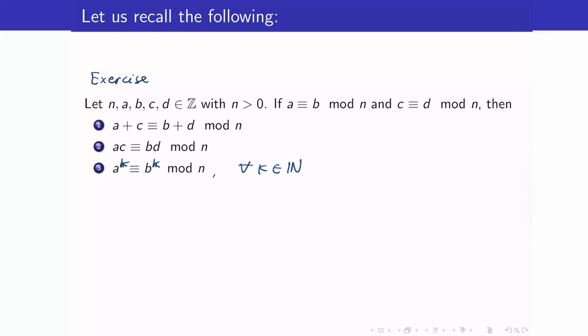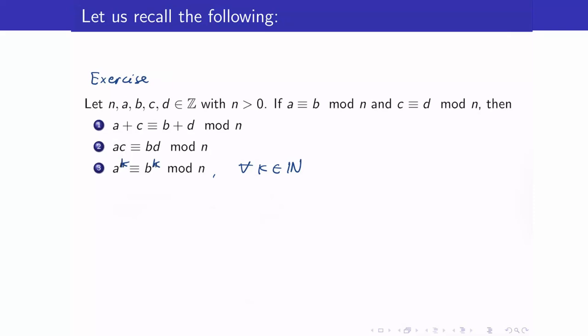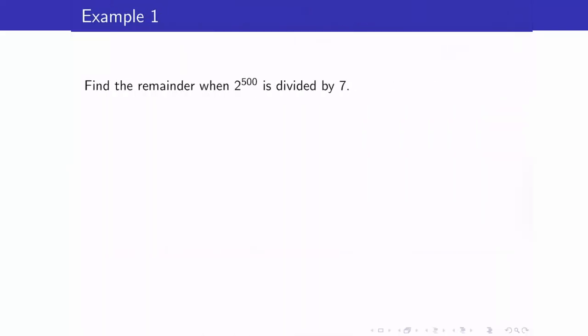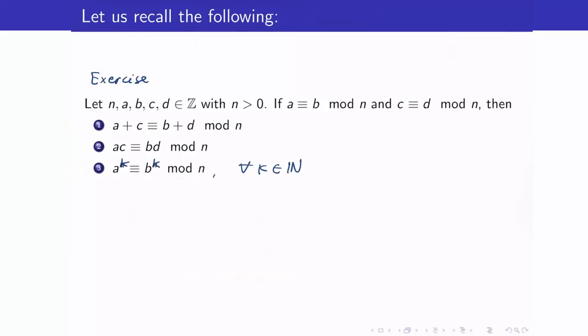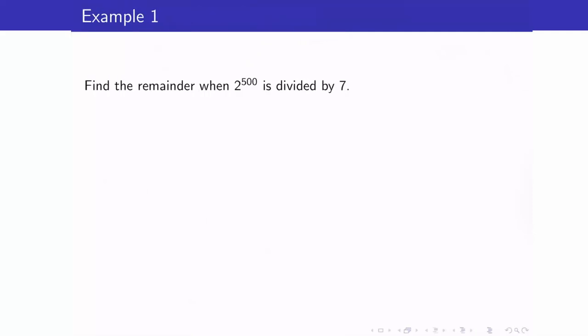This result tells us that whatever we do in equality and equations is also true for congruence modulo n. This will be very useful in making computations modulo n, as we can see in the next example. Suppose we want to find the remainder when 2 to the 500 is divided by 7. Since we have powers of 2, we will make use of the exponent result. Let us first look at some powers of 2.